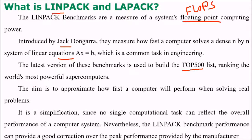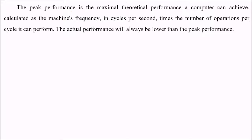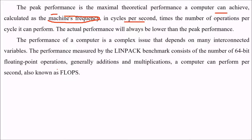The aim is to approximate how fast a computer will perform in solving real problems, so it is a simplification since no single computational task can reflect the overall performance of a computer system. This LINPACK benchmark performance can provide a good correlation over the peak performance provided by the manufacturer. The peak performance is the maximum theoretical performance a computer can achieve, calculated as the machine's frequency in cycles per second times the number of operations per cycle it can perform. The actual performance will always be lower than the peak performance.